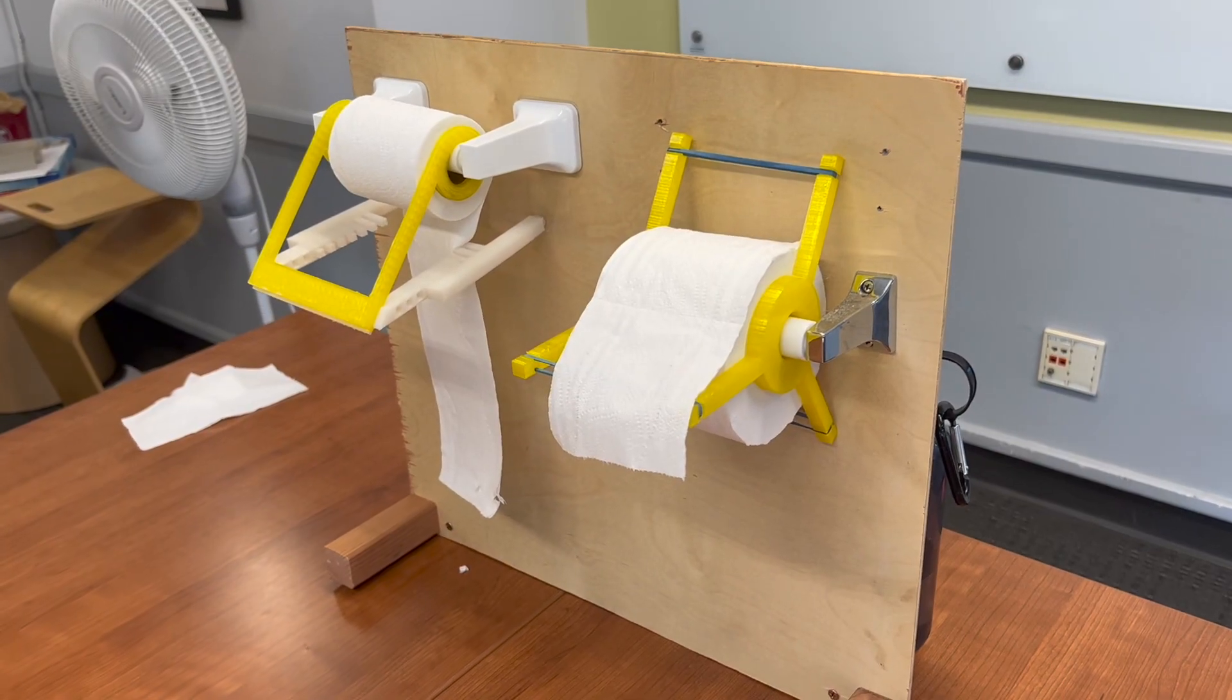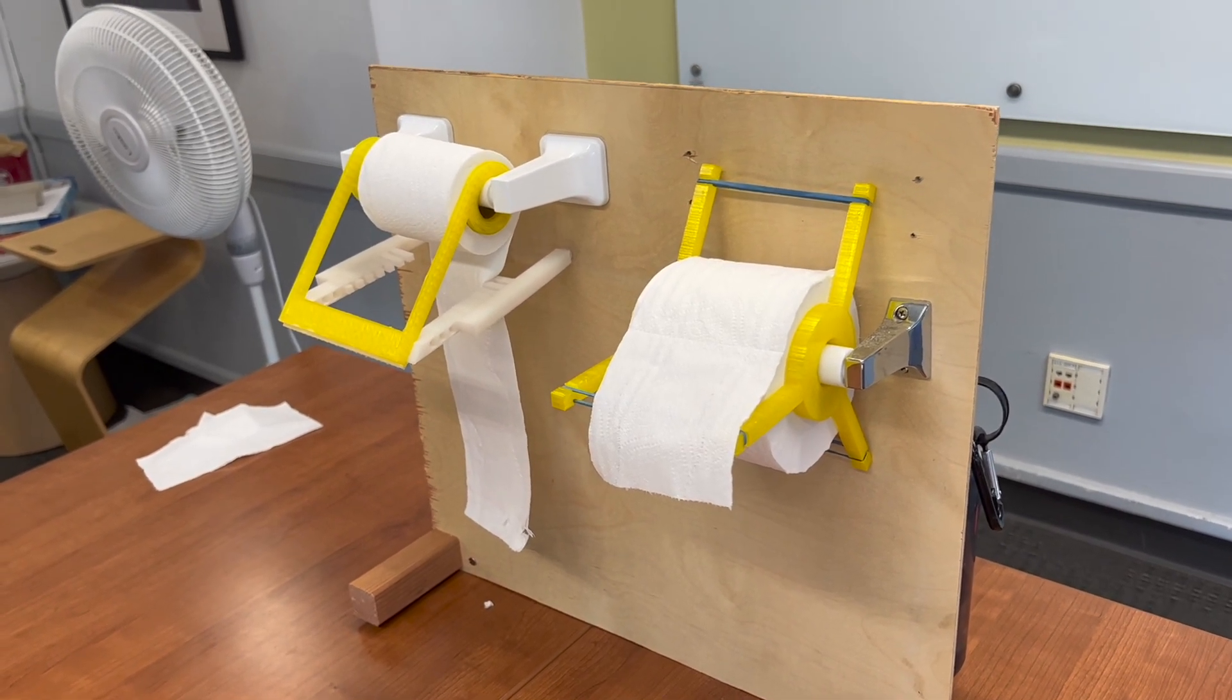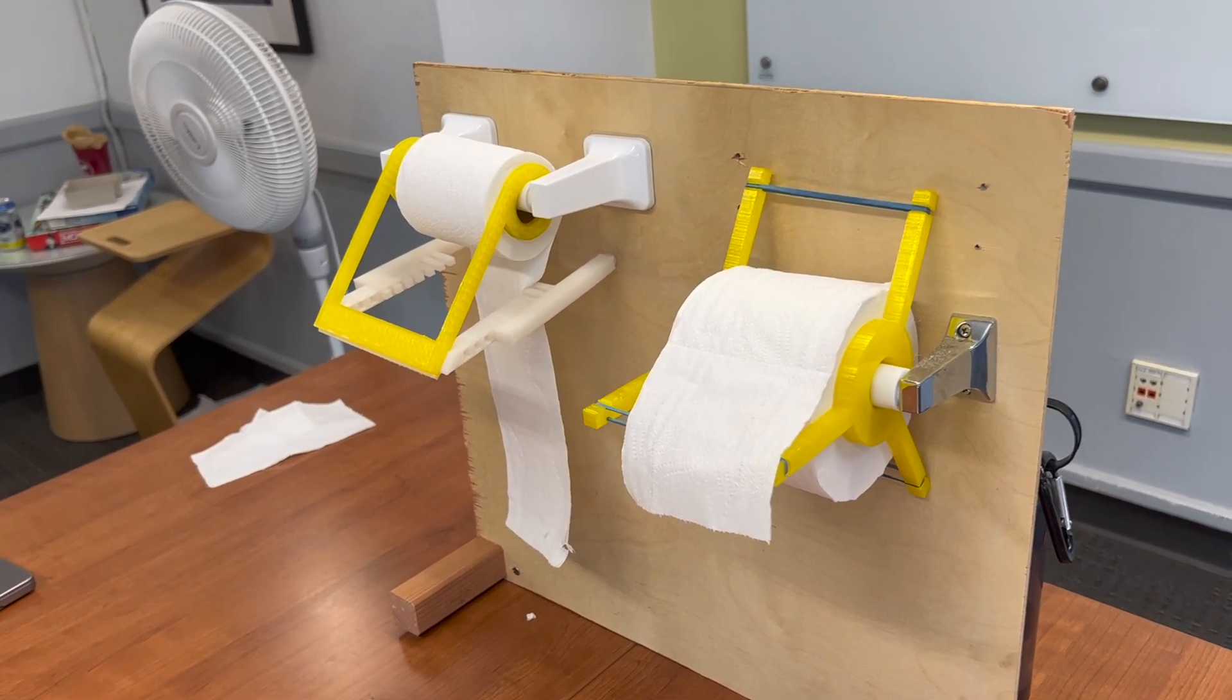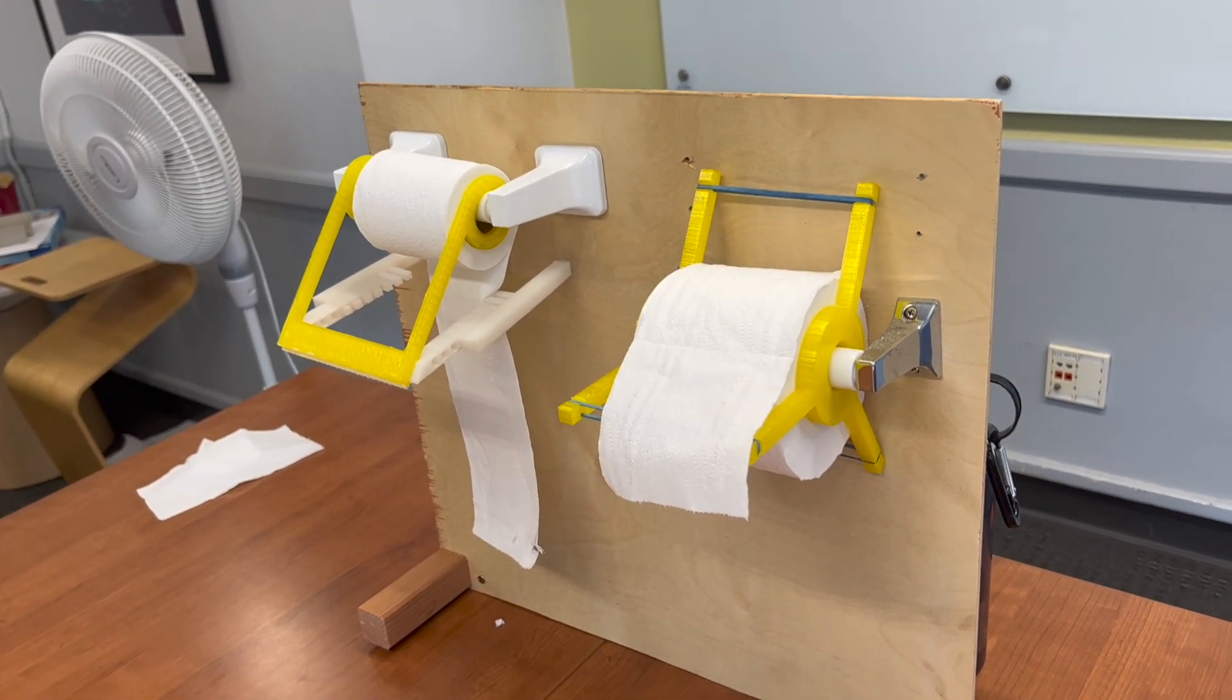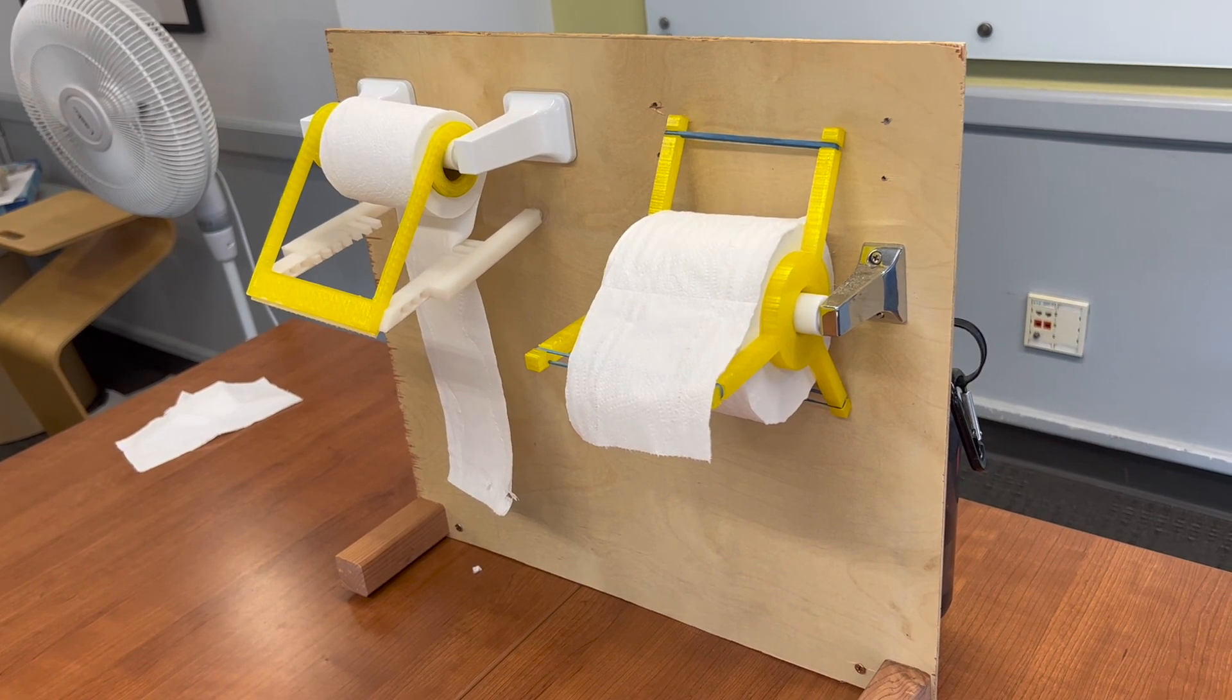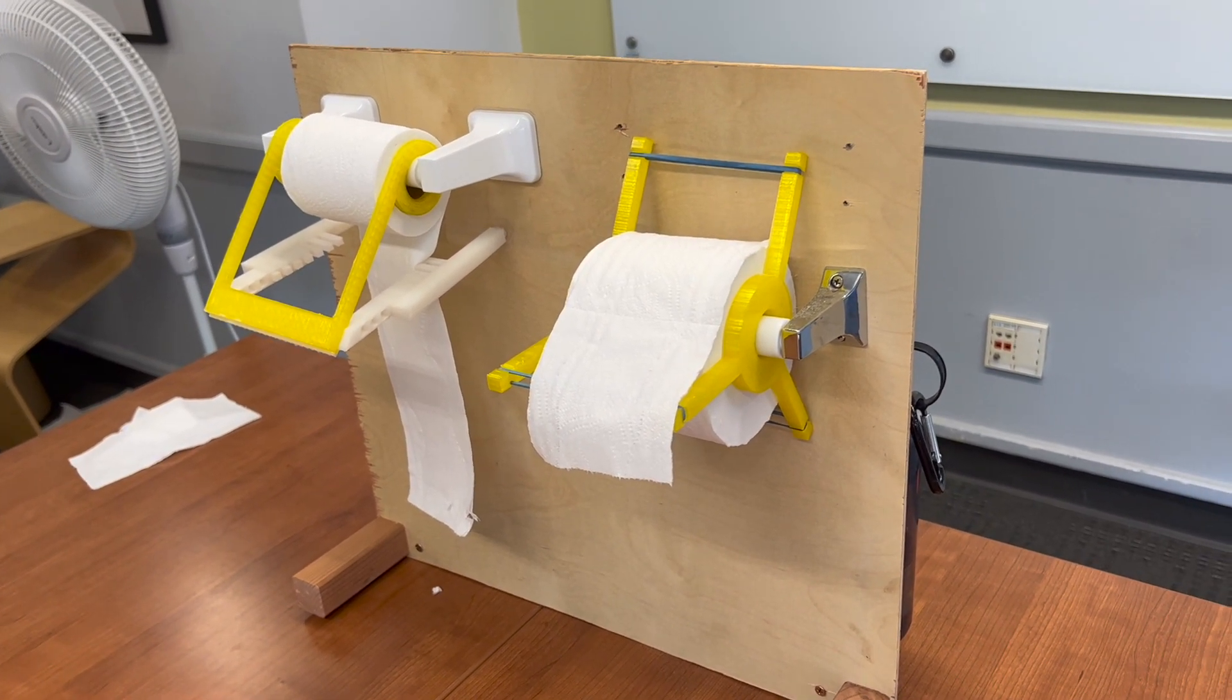Those are our two EZ Roll designs. You can check them out on our website where we have full instructions, as well as links to some of the parts like the suction cups that you might need. We also have these files available on Thingiverse, so you can go ahead and 3D print them yourself or order them to be 3D printed. Thank you, guys.